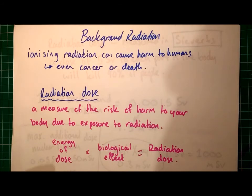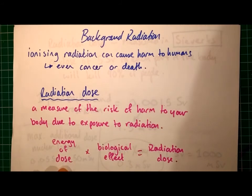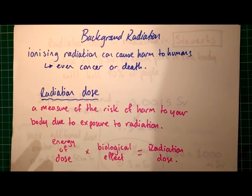What do we mean when we say radiation dose? The radiation dose is a measure of the risk of harm to your body due to exposure of radiation. And this exposure is a combination of the energy of the dose that you receive — a way of measuring how much of the radiation is actually colliding with your body.